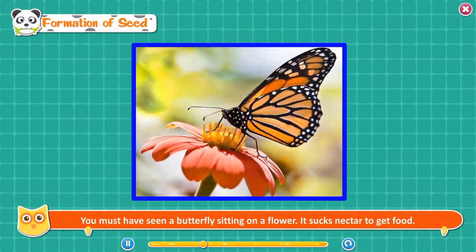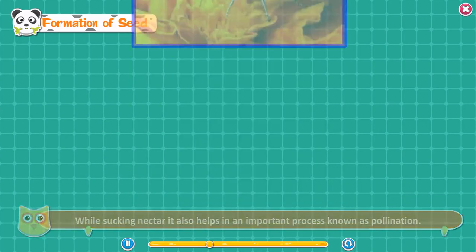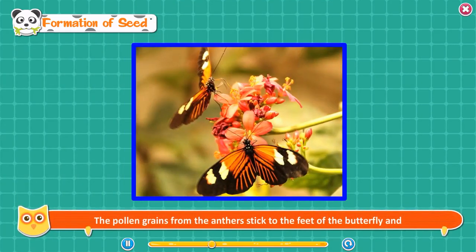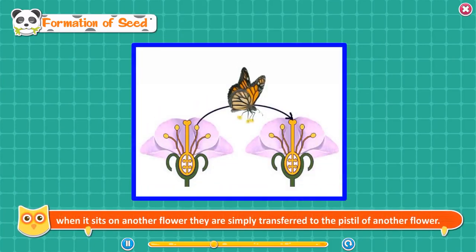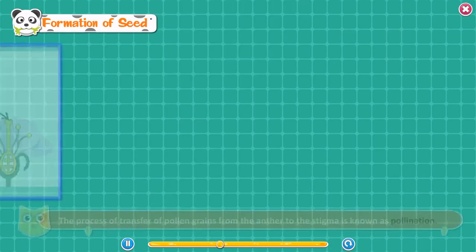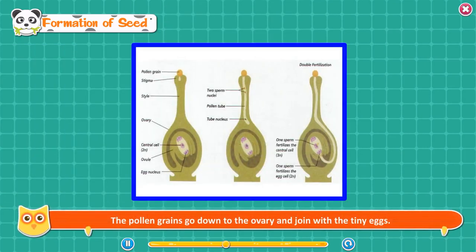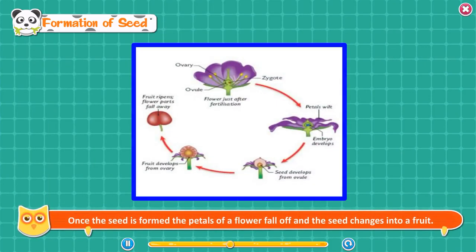Formation of seeds. You must have seen a butterfly sitting on a flower — it sucks nectar to get food. While sucking nectar, it also helps in an important process known as pollination. The pollen grains from the anthers stick to the feet of the butterfly and when it sits on another flower, they are transferred to the pistil. Many other insects help in the transfer of pollens from one flower to another. The process of transfer of pollen grains from the anther to the stigma is known as pollination. The pollen grains go down to the ovary and join with the tiny eggs — this process is called fertilization. Thus, a seed is formed. Once the seed is formed, the petals of a flower fall off and the seed changes into a fruit.